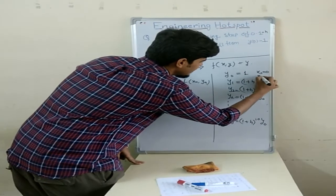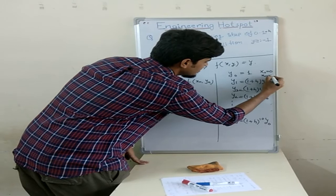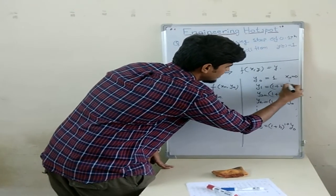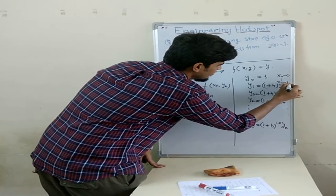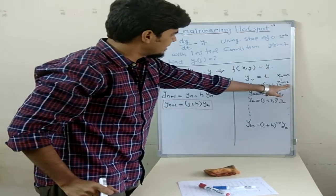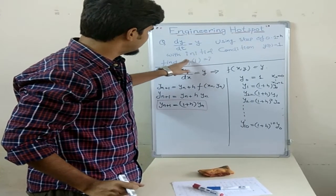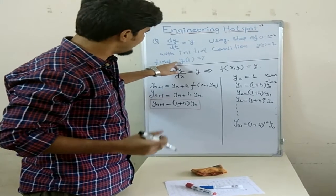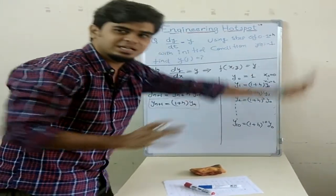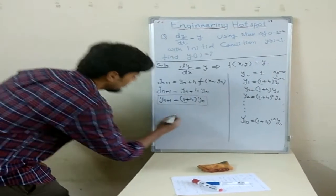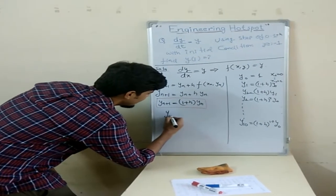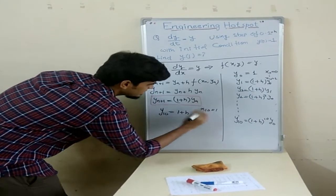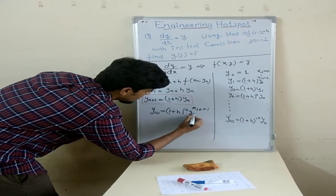Because x(10) equals to, after calculating this, x(10) will be 1 here. So x is 1, when x is 1, he wants us to find out y(1). So here we can see that y(10) is (1 plus h)^10 times y(0). What is y(10)? x(10) equals to 1. So y(10) equals to (1 plus h)^10 times y(0).